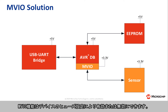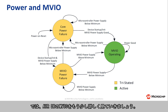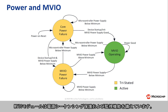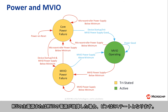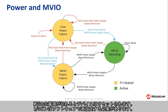MVIO can be enabled or disabled by setting a fuse on the device. The MVIO peripheral is designed with power sequencing, protections, and monitoring. If either the microcontroller's main supply fails or the MVIO supply fails, then the pins are tristated. If the MVIO loses power and regains it later, the pins will reload their configurations. If the microcontroller's main supply loses power, then the device will reset and the IO pins will have to be reconfigured in software.